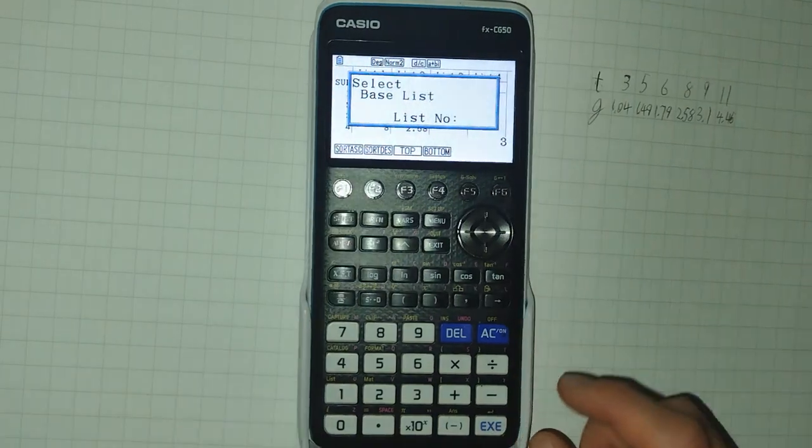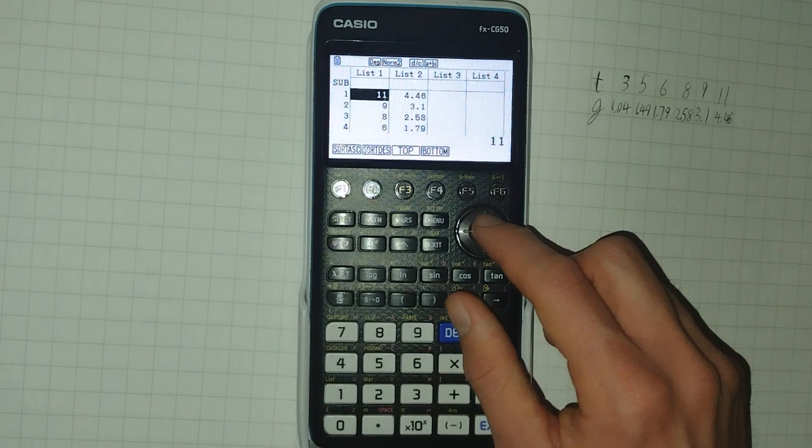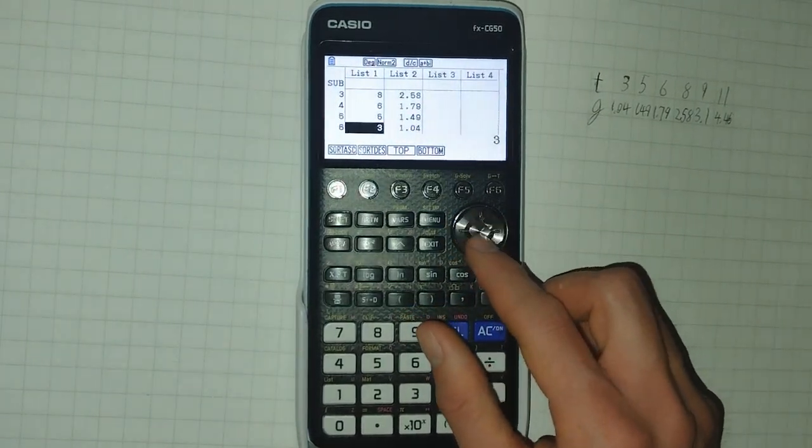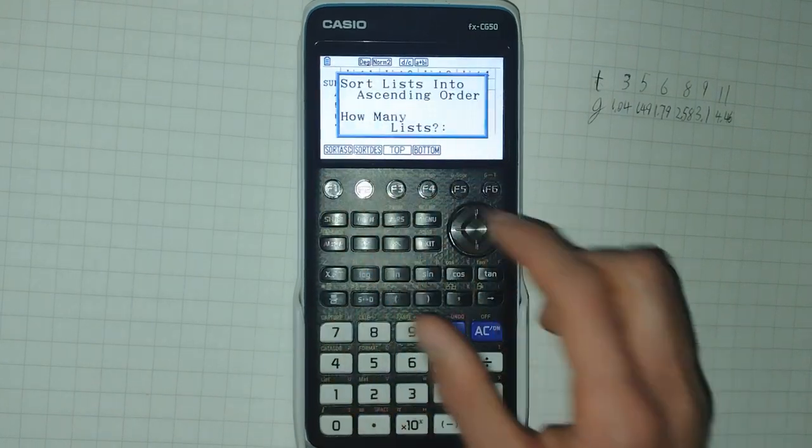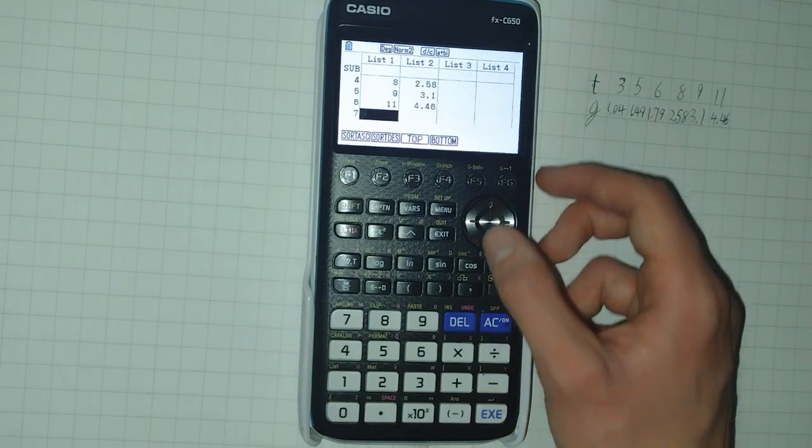If I click sort descending and select two to sort two lists, I can then select the base list, list one, the second list, list two, and it will now sort both list one and list two based on the values in list one. And I can undo this again as well.